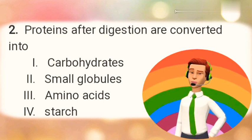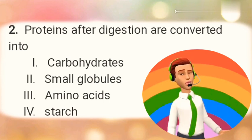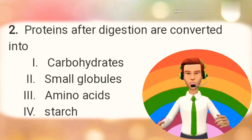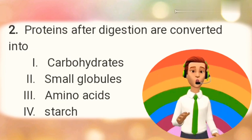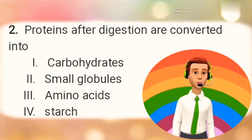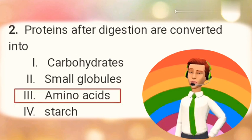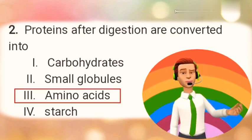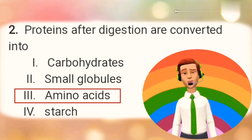Our second question: Protein after digestion is converted into? Option 1: Carbohydrates. Option 2: Small globules. Option 3: Amino acid. Option 4: Starch. The right answer is Option 3 — proteins get converted into amino acid.